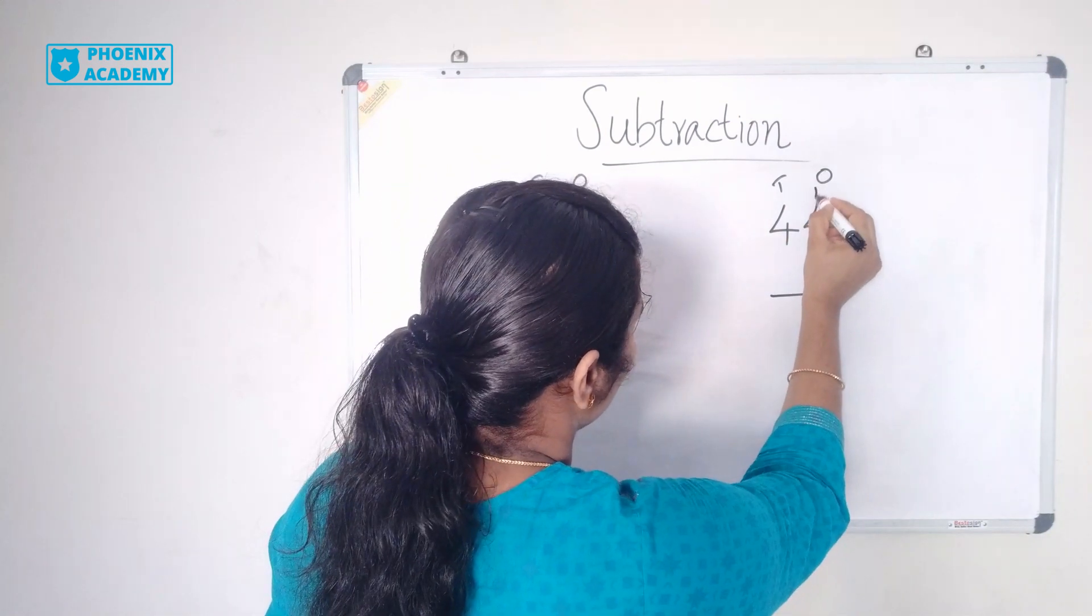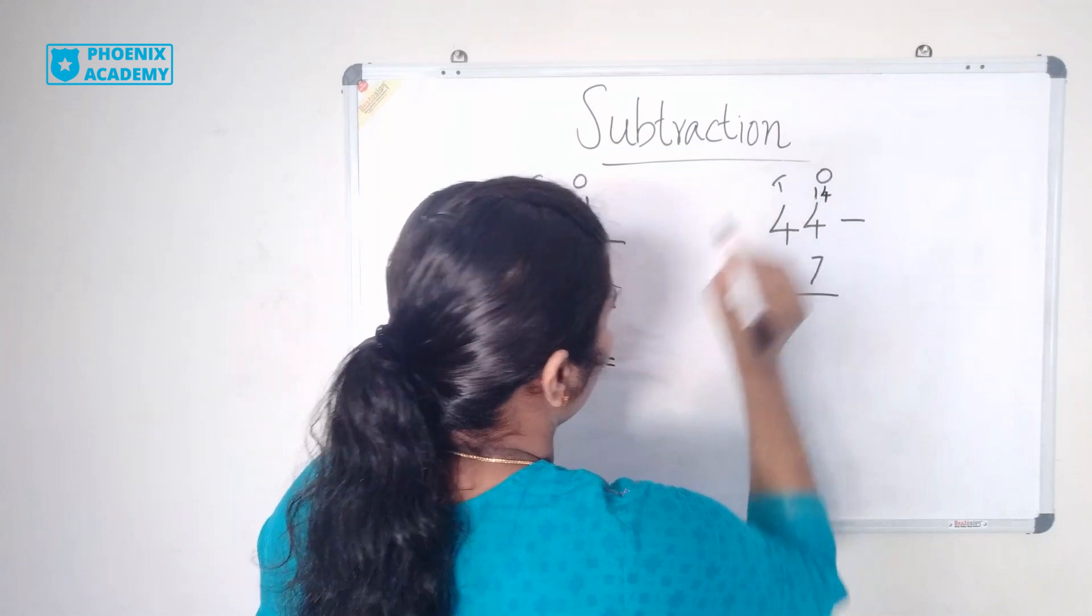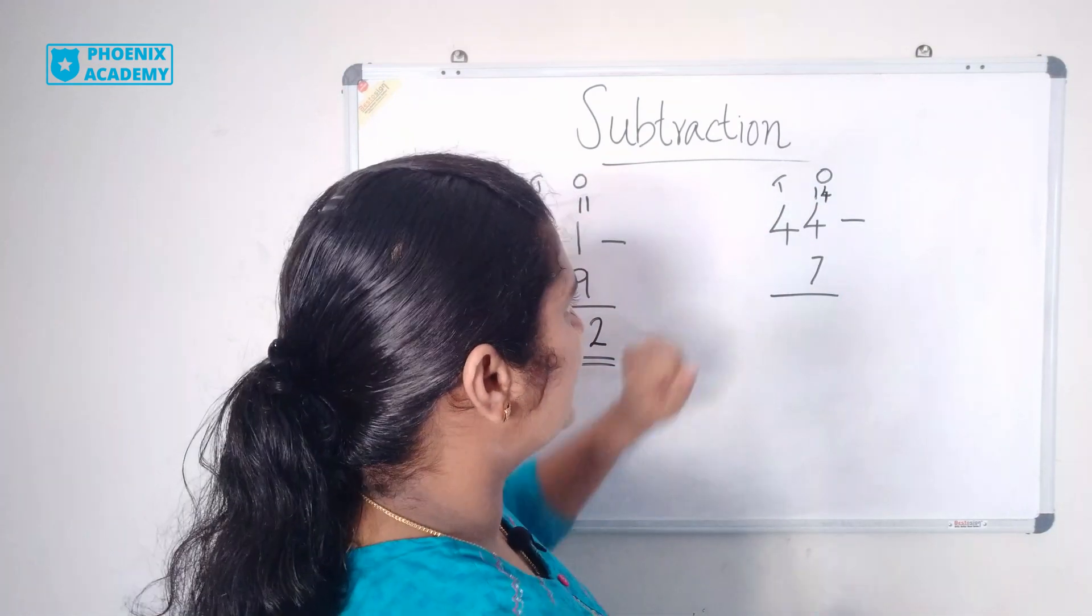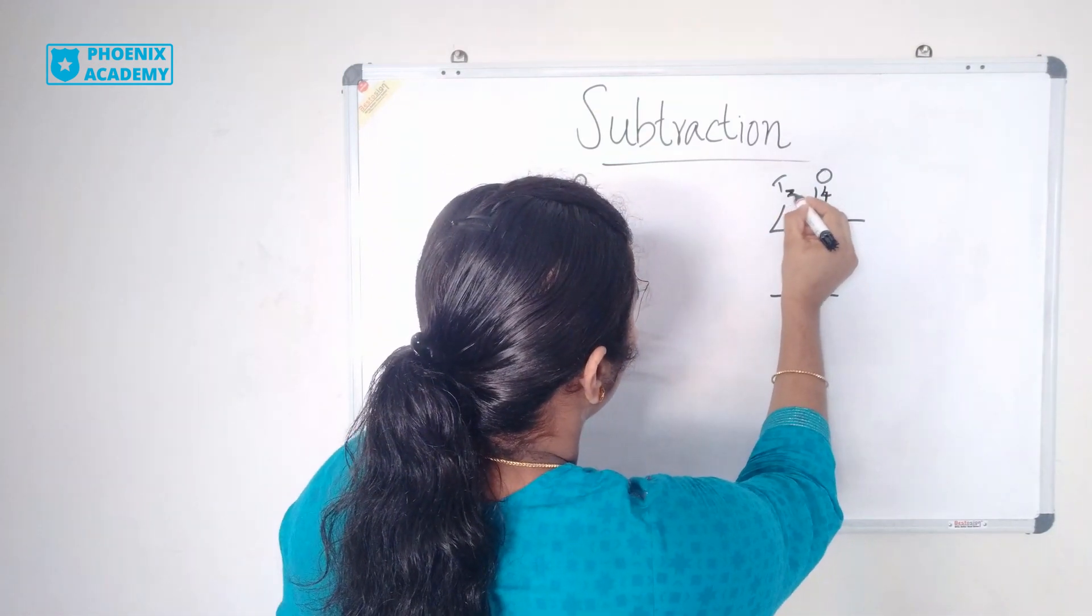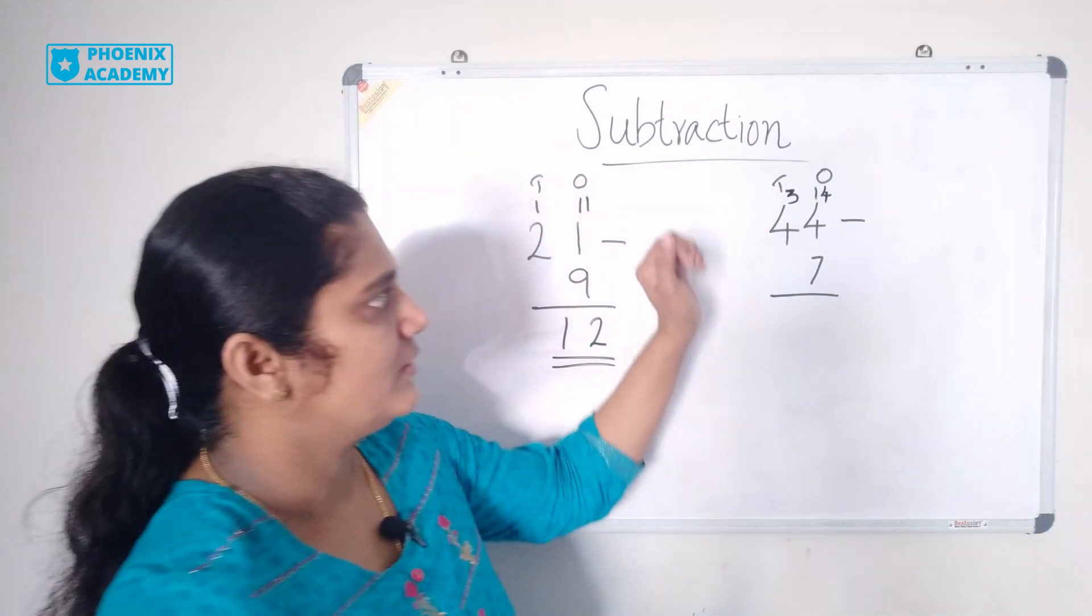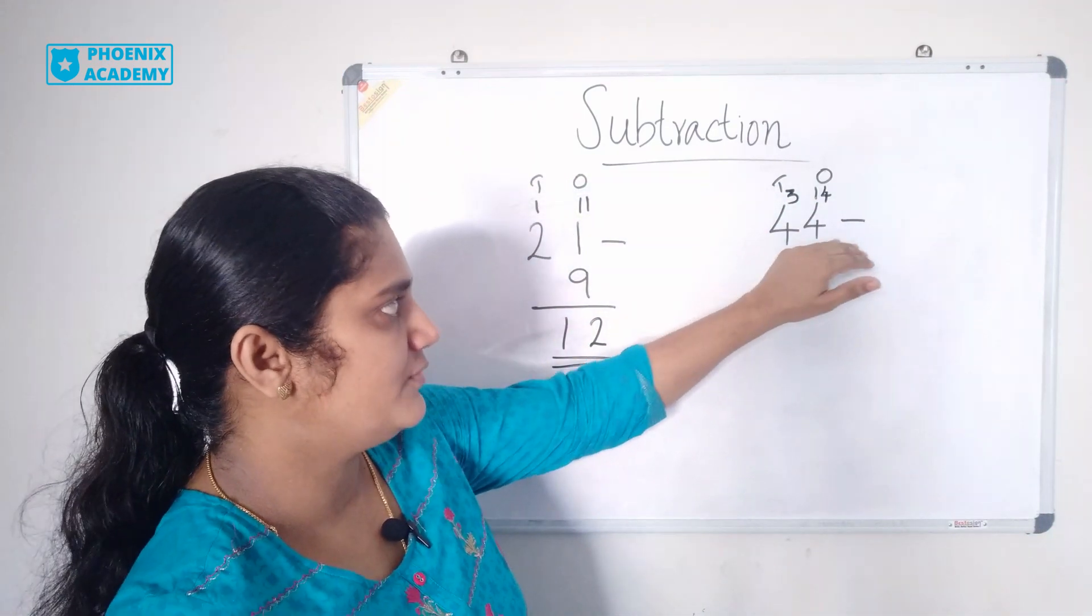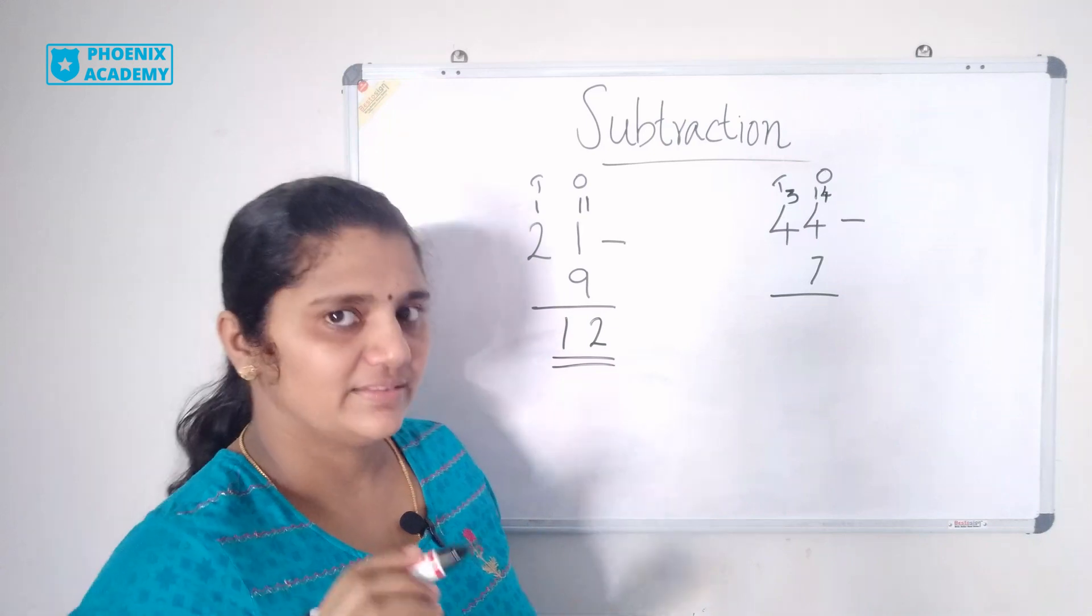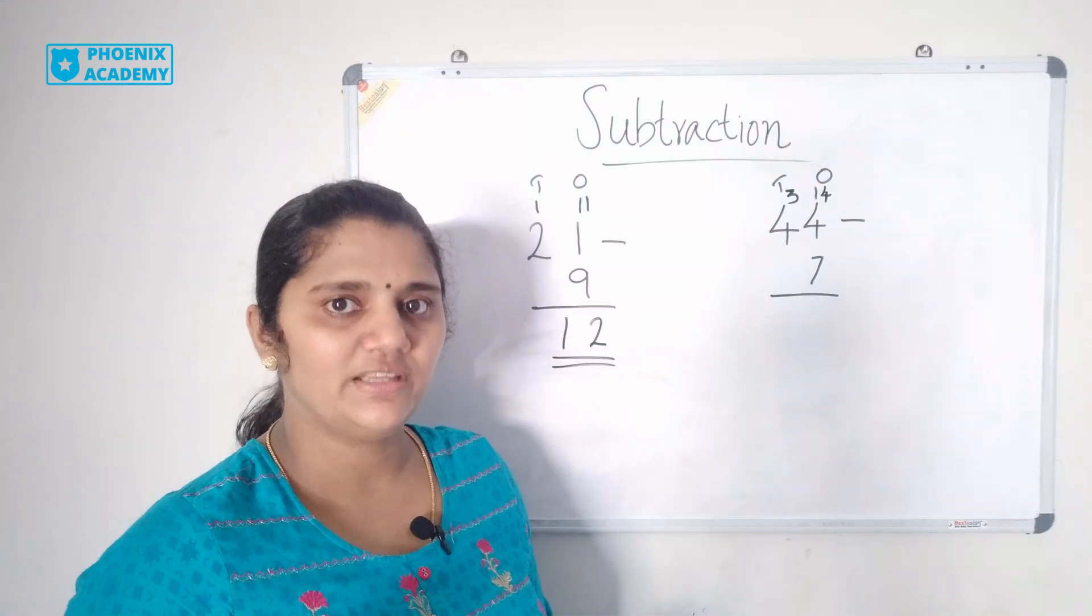So this 4 becomes 14. 4 tens becomes 3 tens. We will regroup 44 as 3 tens and 14 ones.